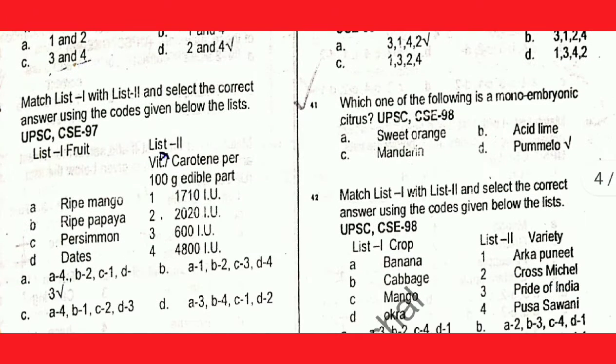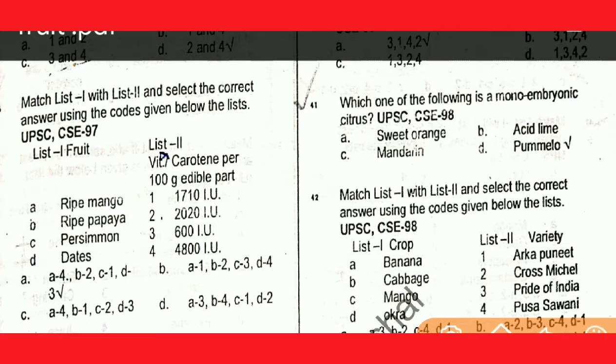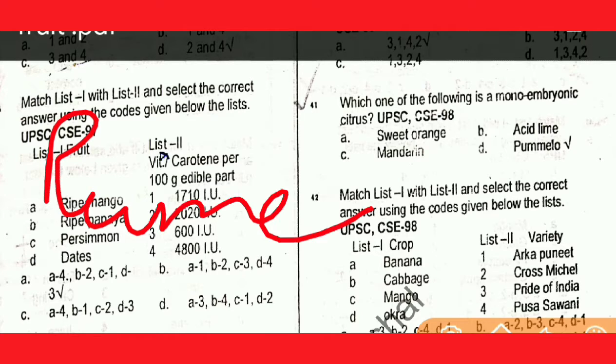Next question: which one of the following is a monoembryonic citrus? The answer is Pumelo — Pumelo is the monoembryonic citrus.